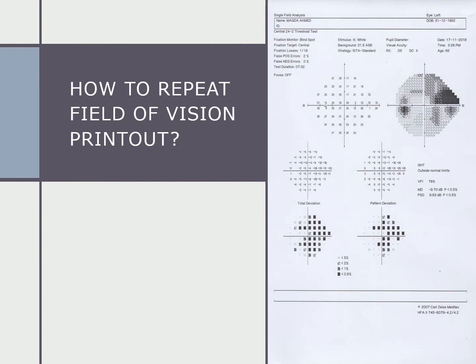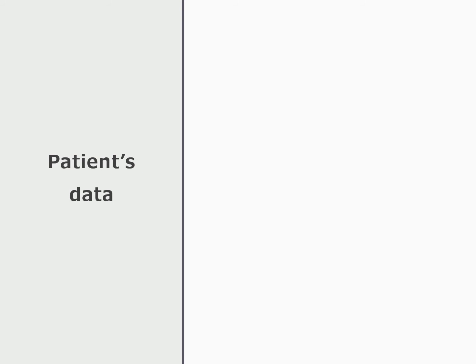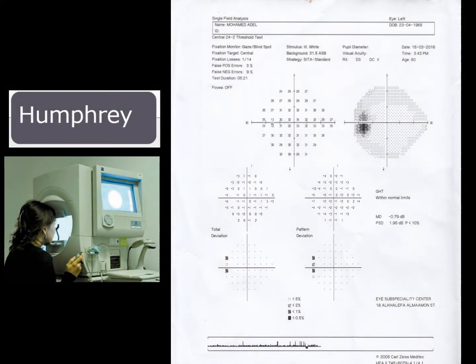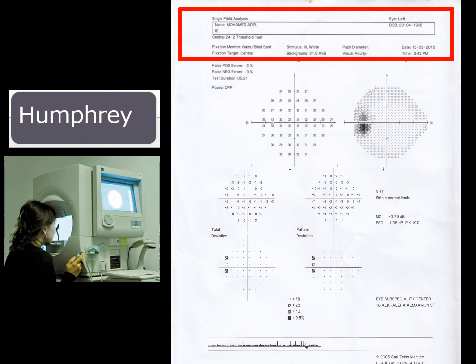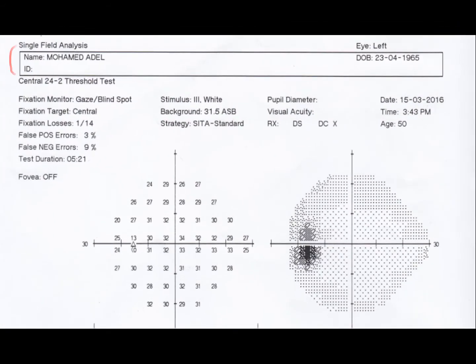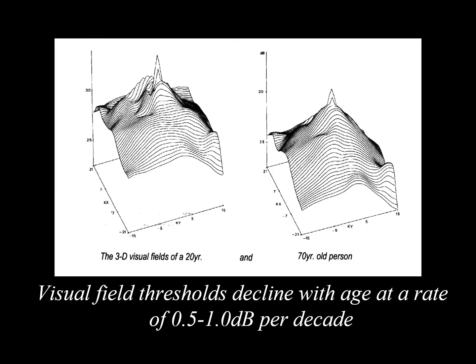First we start by checking the patient's data. You need to check the name, the ID of the patient, the age, and date of birth. This is very important because the data collected are compared with people of the same age, and we all know that the visual field threshold declines with age at the rate of half to one decibel per decade.